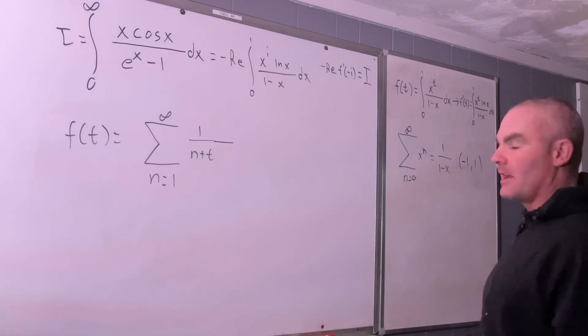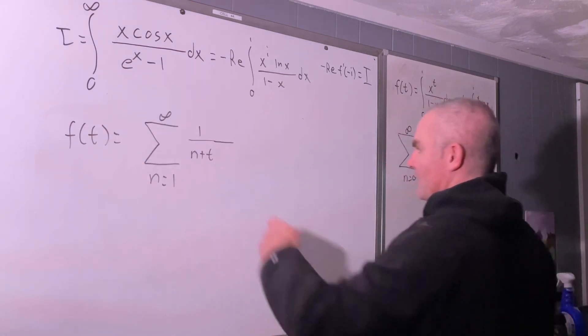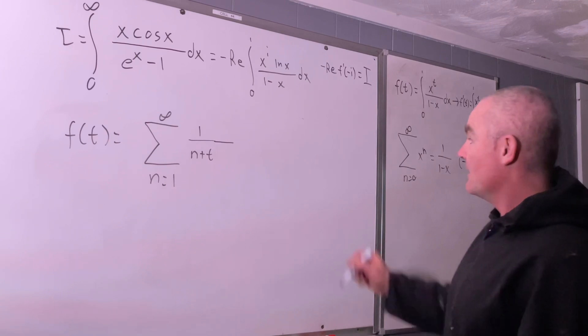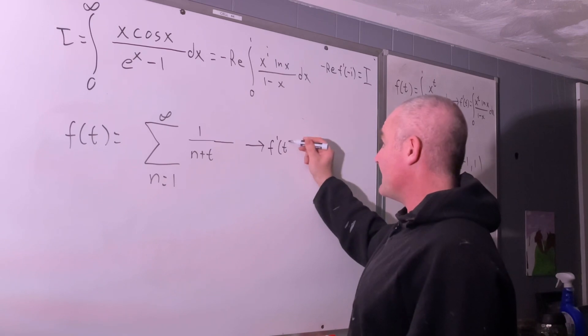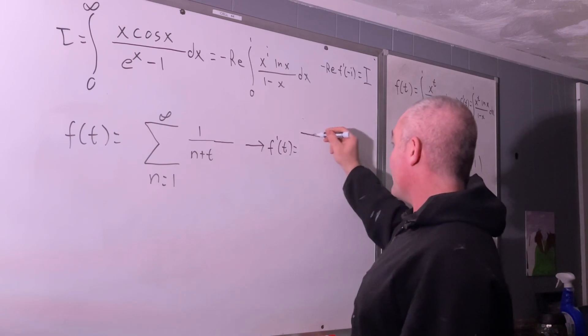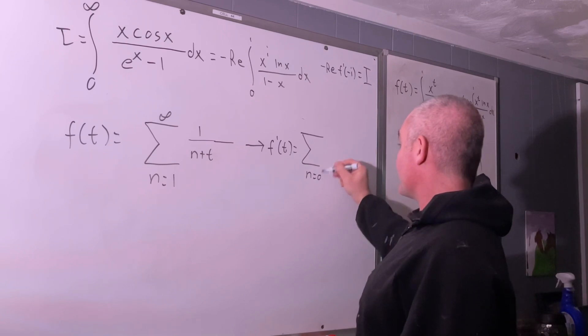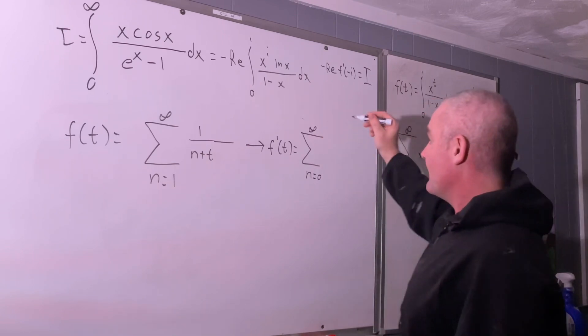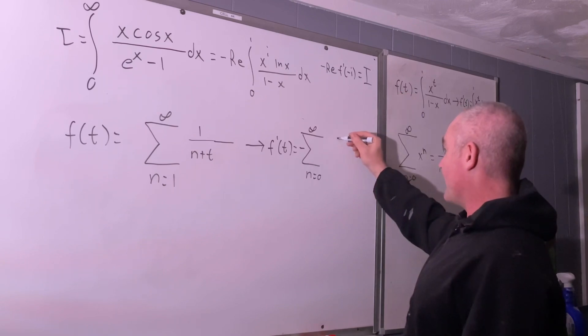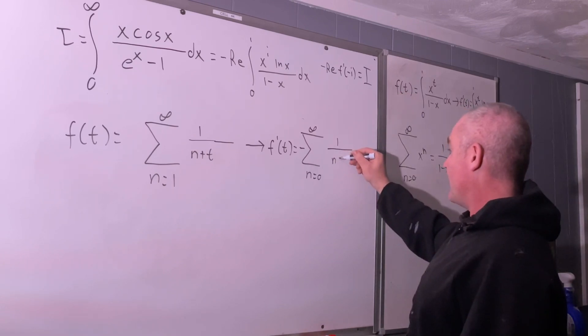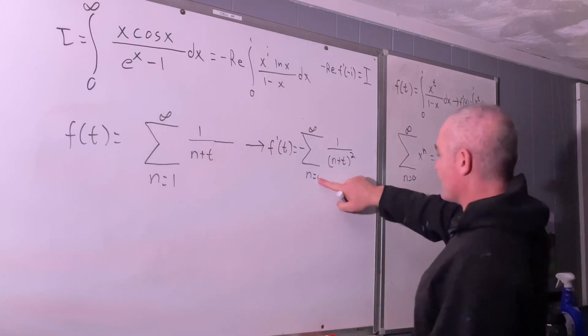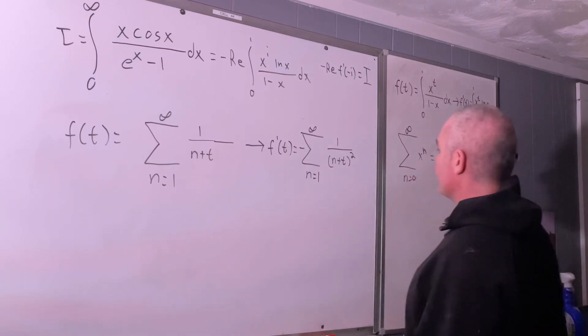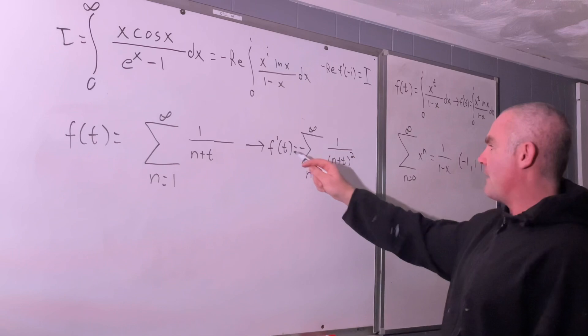This actually doesn't converge, but we're not interested in this sum. We're interested in the derivative of it. So, this implies that f prime of t is equal to the sum as n goes from 0 to infinity of... Let's see. We're going to get a negative sign there, 1 over n plus t all squared. Okay, great. Oh, sorry. This is actually n going from 1 to infinity. All right, so now we have our f prime of t.